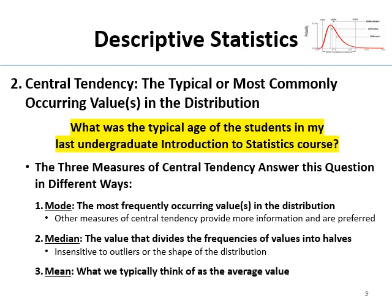Finally, we have the mean — this is the average, the arithmetic average of the distribution. It's the age or score that minimizes the distance between it and all other scores in the distribution. It provides the most information about the underlying distribution and all values in it. So it is sensitive to magnitude, which is both what makes it awesome and also what makes it problematic if you've got skew.